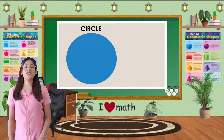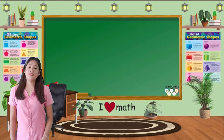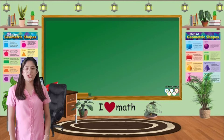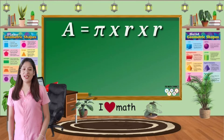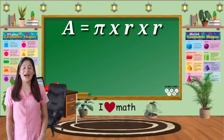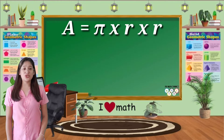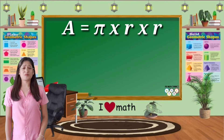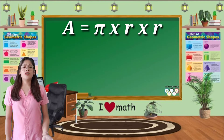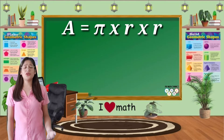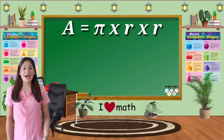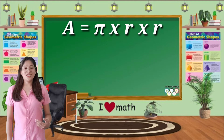The area of a circle can be determined using the formula A, where area is equals to pi times radius squared, or to the power of 2. Or we can say that area is equals to pi R squared.